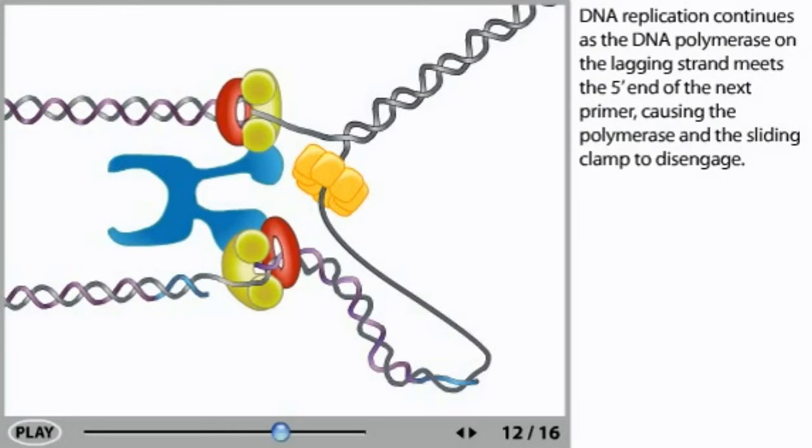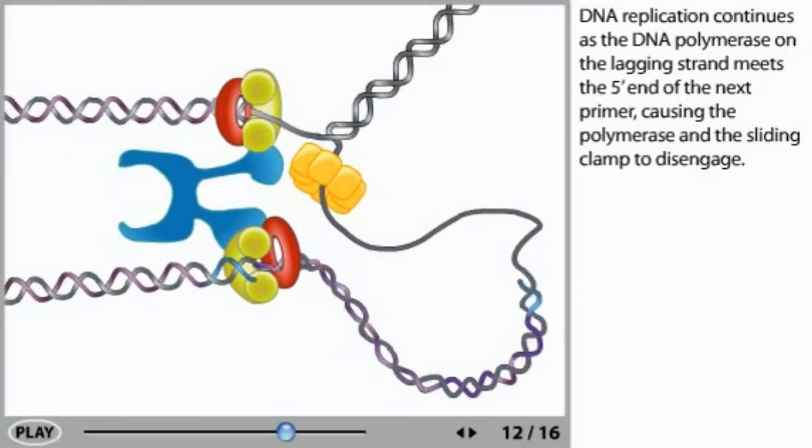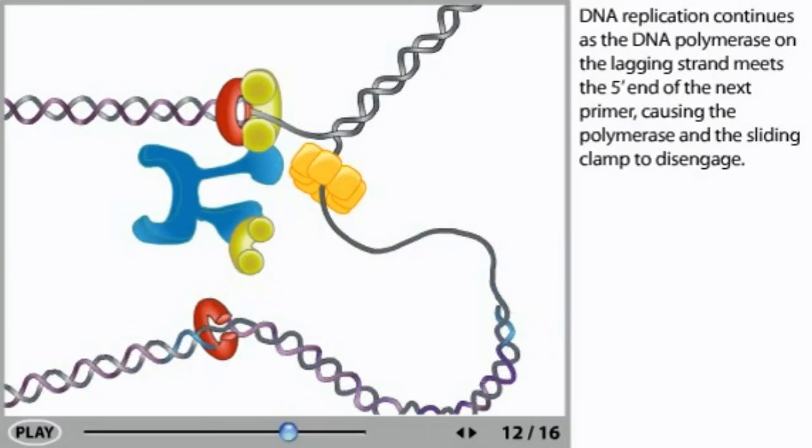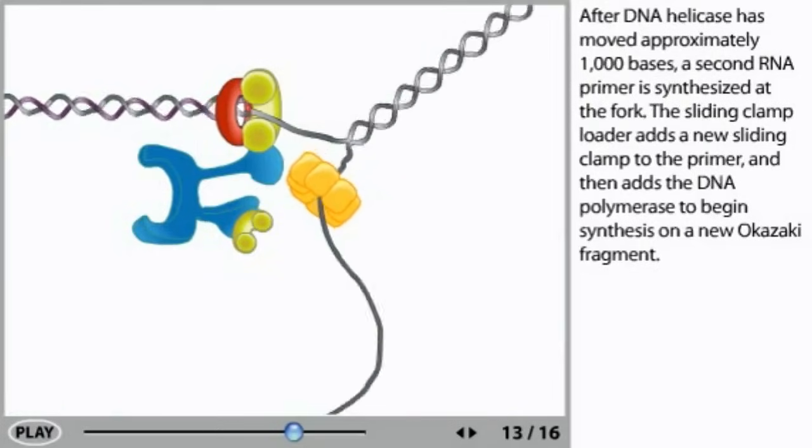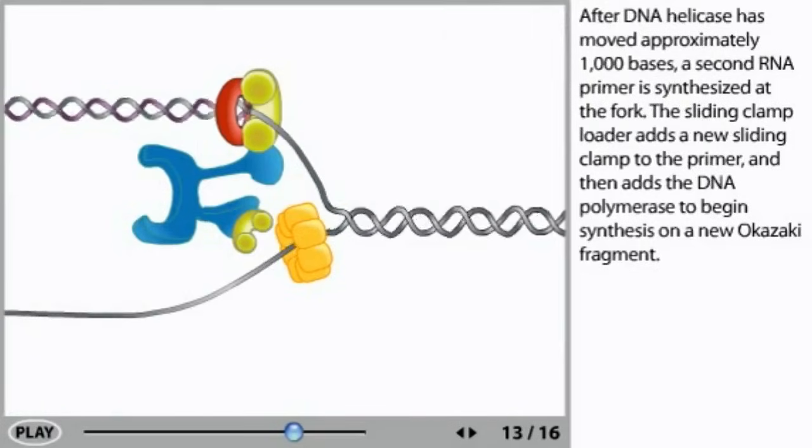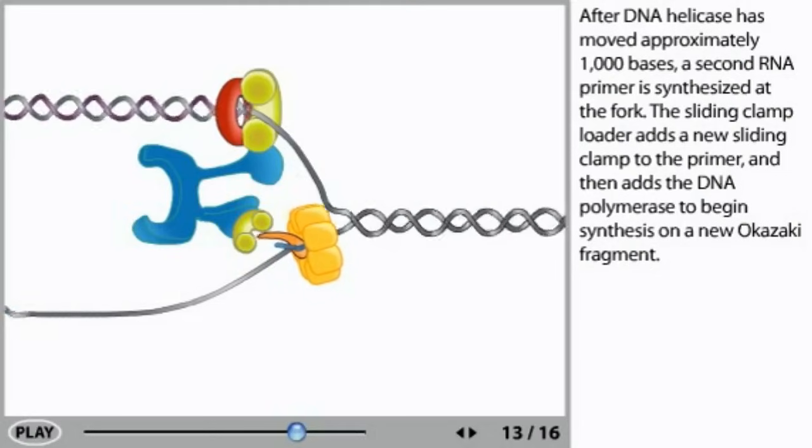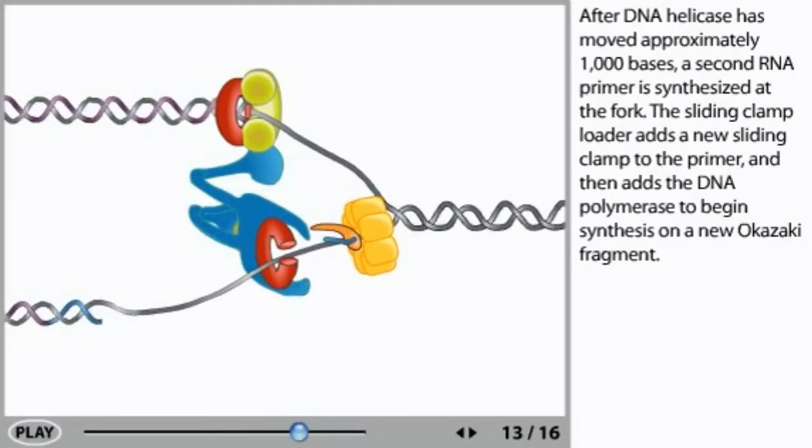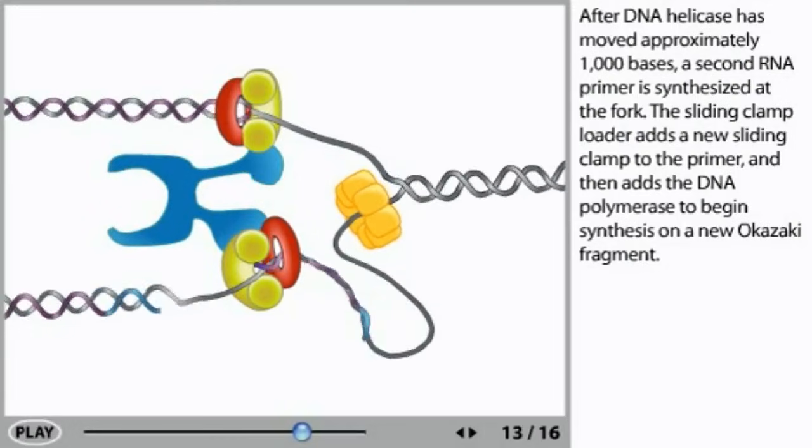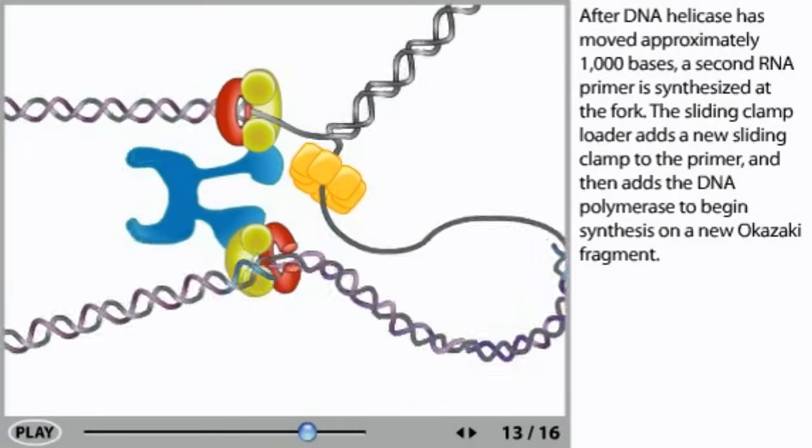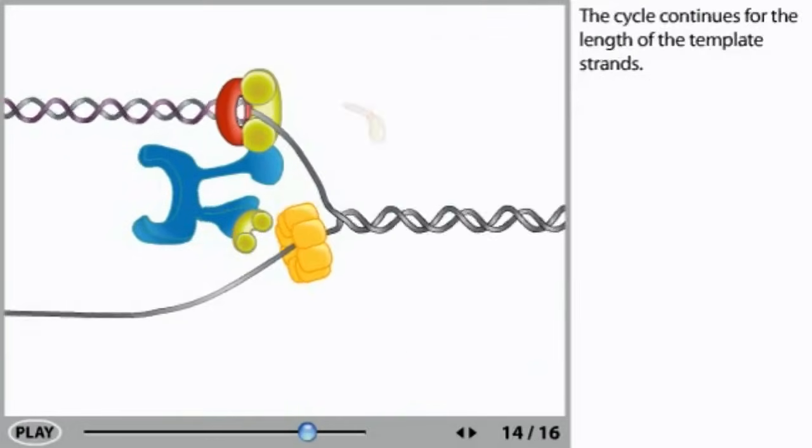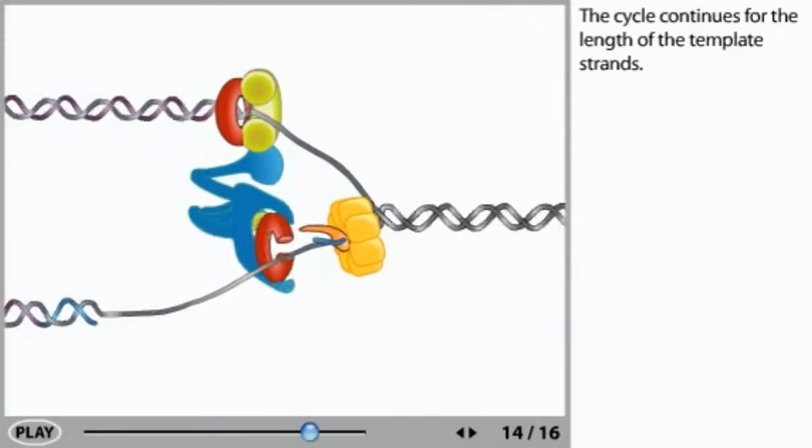DNA replication continues as the DNA polymerase on the lagging strand meets the 5' end of the next primer, causing the polymerase and the sliding clamp to disengage. After DNA helicase has moved approximately 1,000 bases, a second RNA primer is synthesized at the fork. The sliding clamp loader adds a new sliding clamp to the primer and then adds the DNA polymerase to begin synthesis on a new Okazaki fragment. The cycle continues for the length of the template strands.